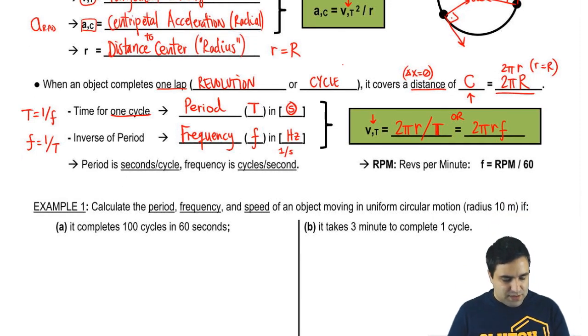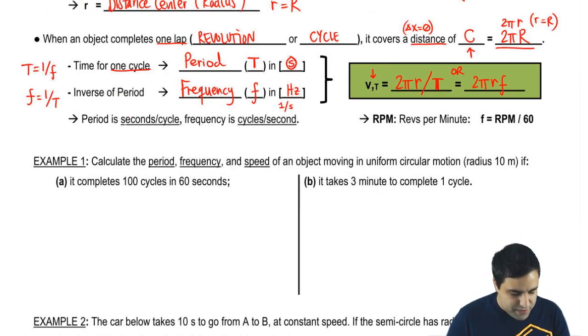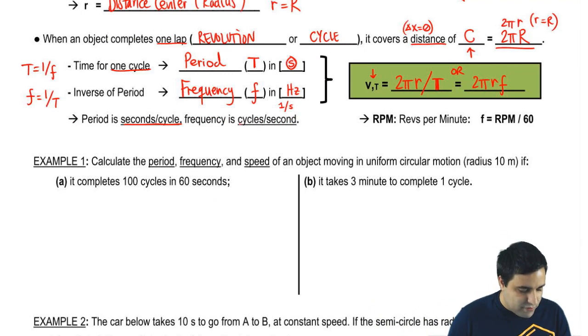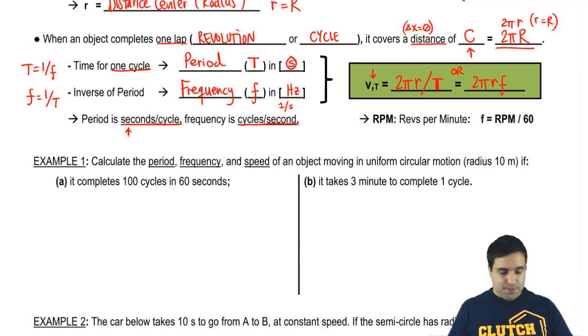One thing that people struggle with sometimes is how to figure out whether a piece of information that you're given is a period or a frequency. And one way to think about it is that period is seconds per cycle. How many seconds does it take to do something? And frequency is cycles per second. How many times can you get it done in one second? The frequency of something, how often it happens, and then here's how long does it take for it to happen.